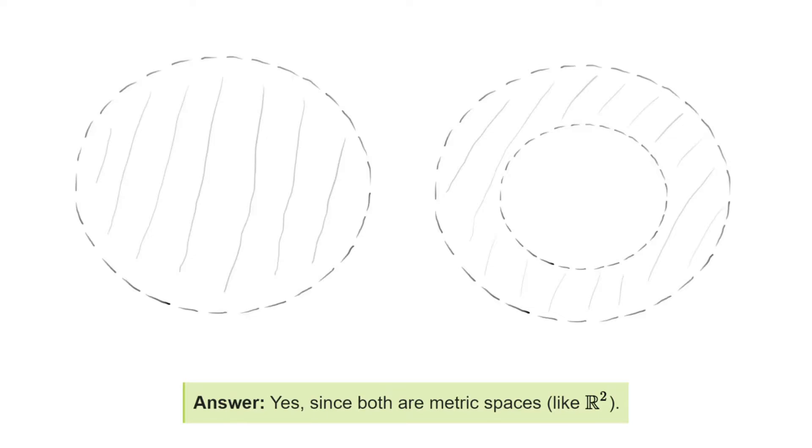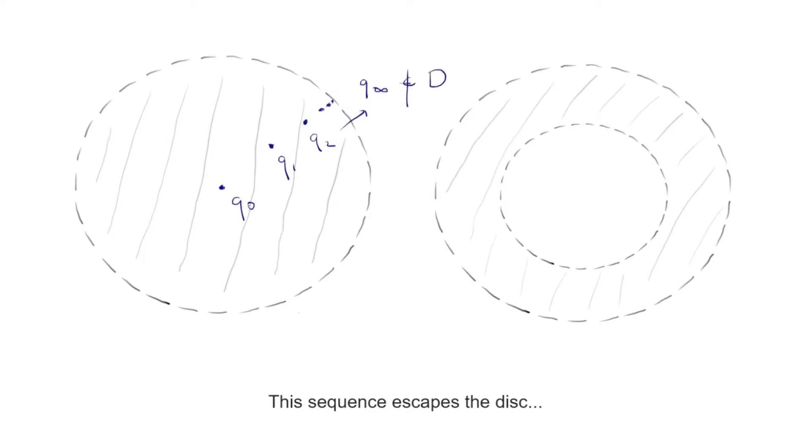Let's check then some other property. For instance, are they both compact? On the left, we see a sequence of points in the disk that approaches the circle. This implies that there's no convergent subsequence, and therefore the disk is not compact. We can also find an escaping sequence on the annulus.